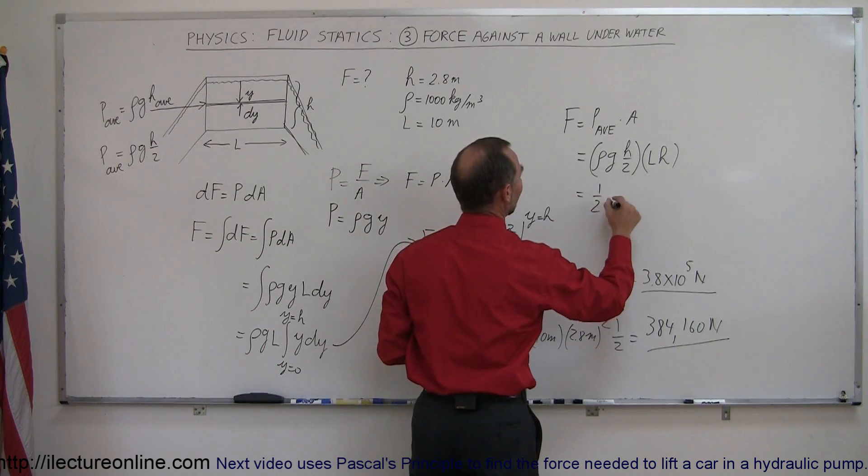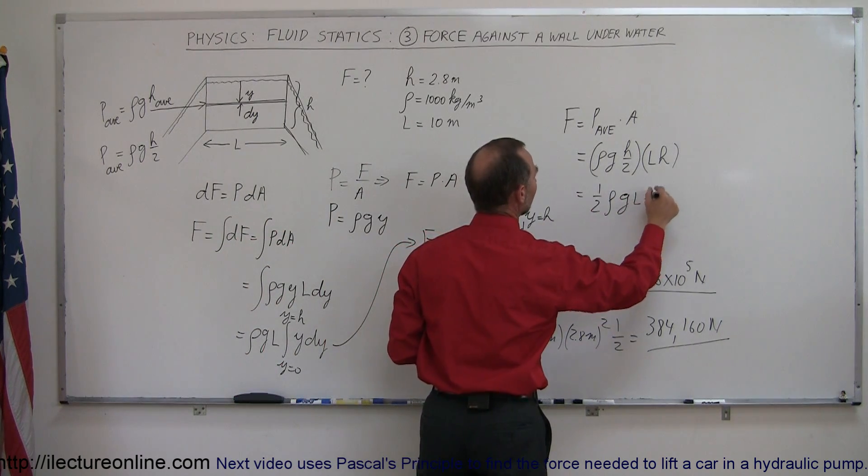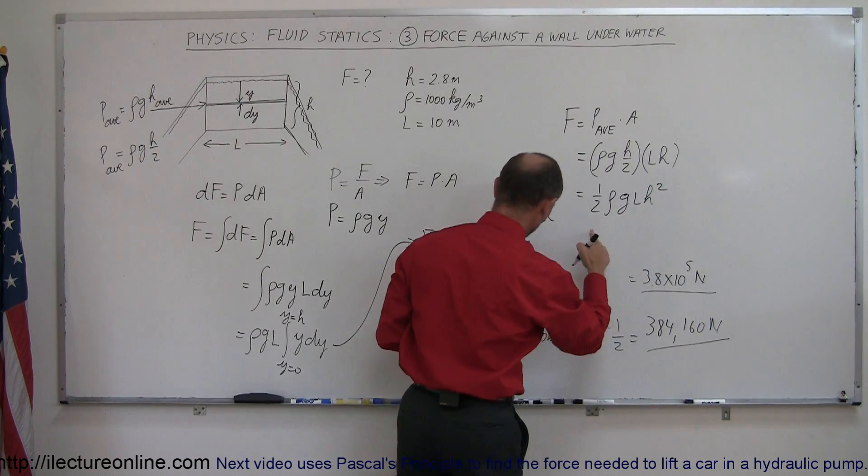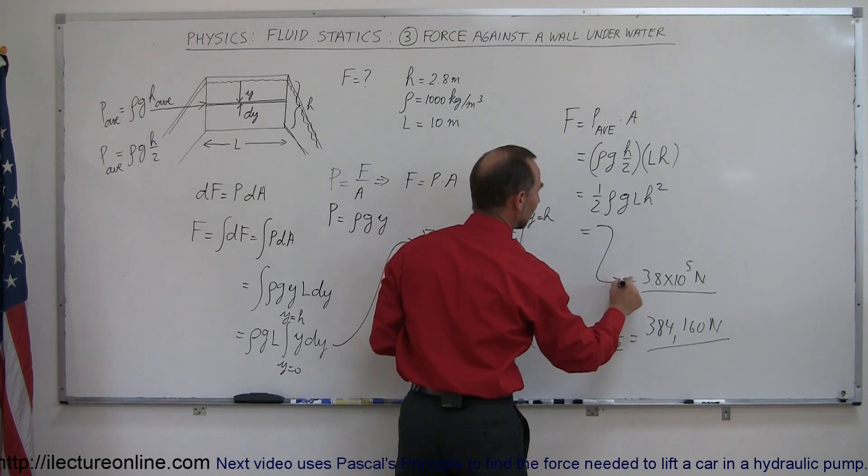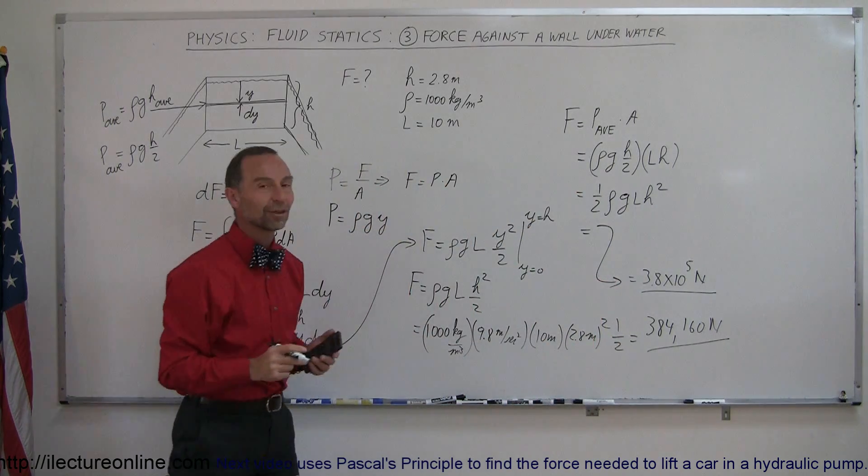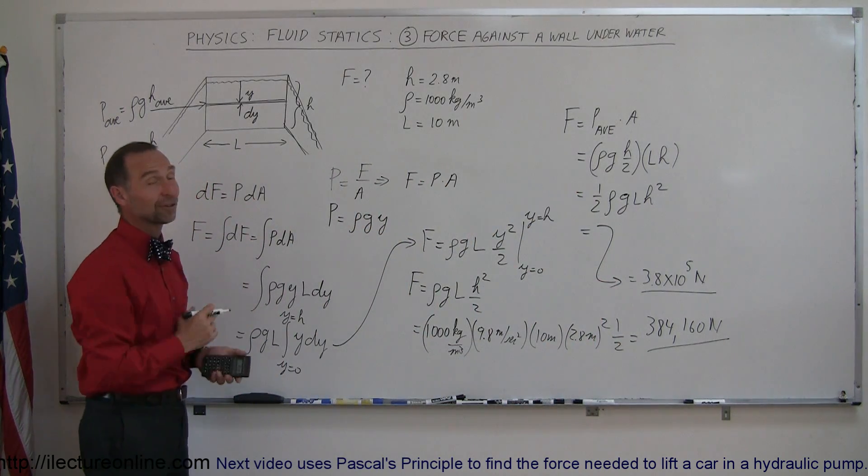And notice we'll get the exact same equation that we had over here when we used the integration. So this can be written as 1 half ρgLh squared, and if you then plug the exact same numbers in here, you will also get the same result of 3.8 times 10 to the 5th newtons. So you can actually solve it like that as well.